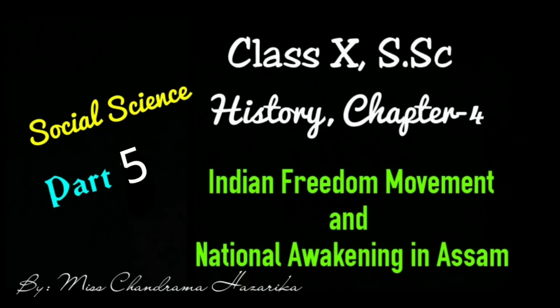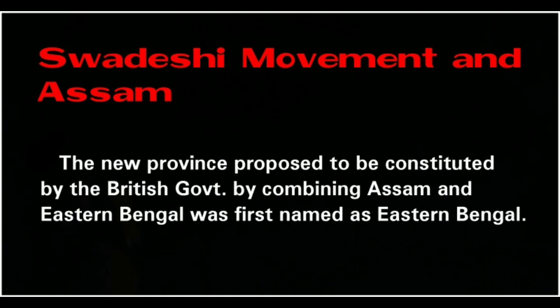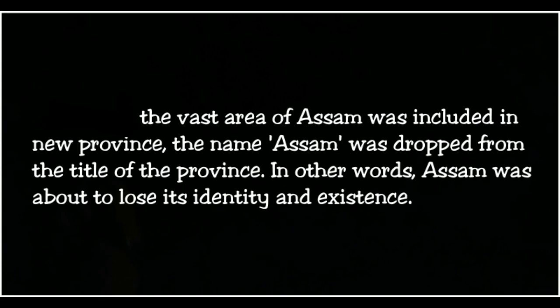Today in this video I am going to explain about Class Social Science History Chapter 4, Part 5: Swadeshi Movement and Assam. The new province proposed to be constituted by the British government by combining Assam and Eastern Bengal was first named as Eastern Bengal. The vast area of Assam was included in the new province, and the name Assam was dropped from the title of the province.